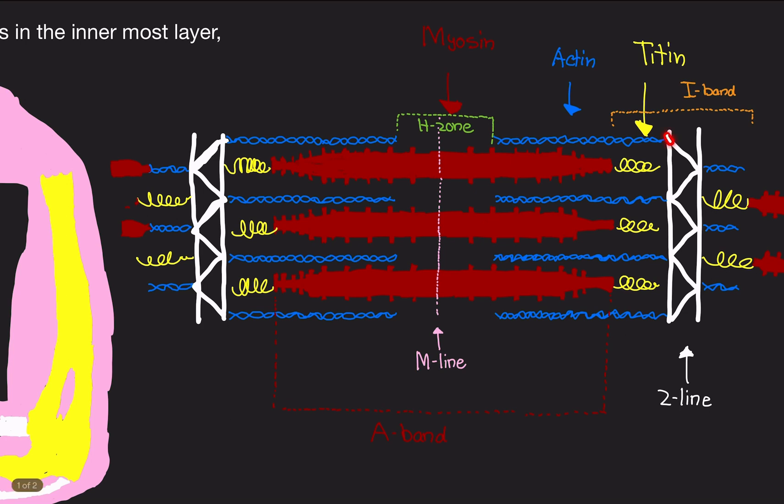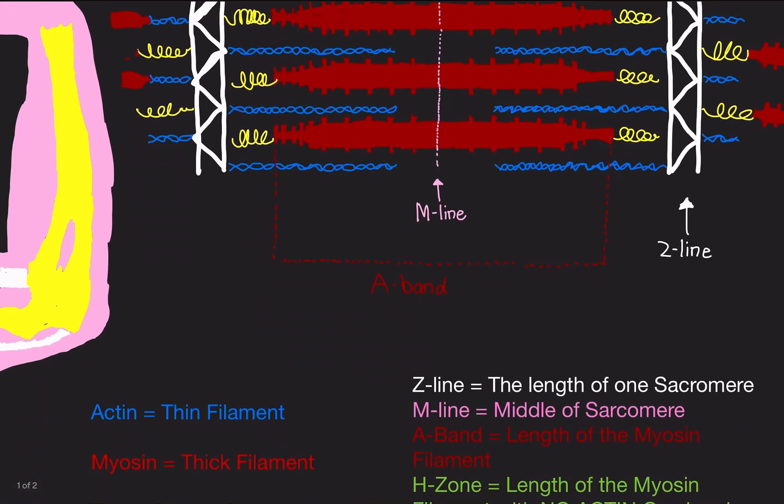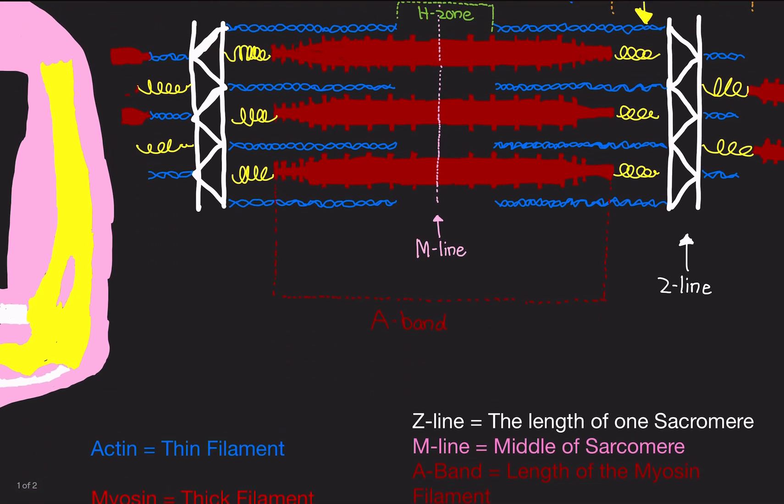So the first thing is the Z-line, which is this zigzag looking portion right here. These indicate the end of the sarcomere. So Z-line to Z-line is the length of one sarcomere. This section here is the one sarcomere, from Z-line to Z-line.